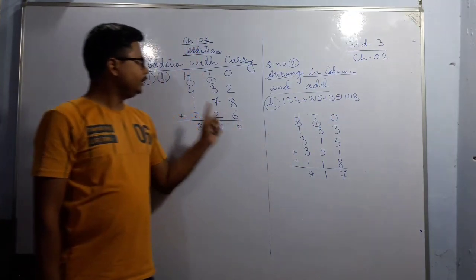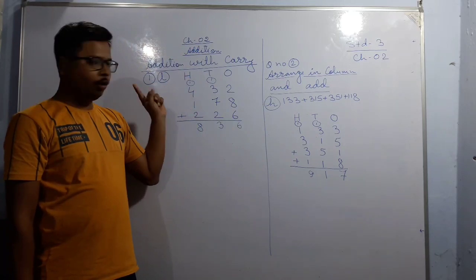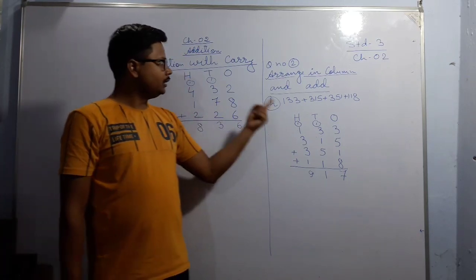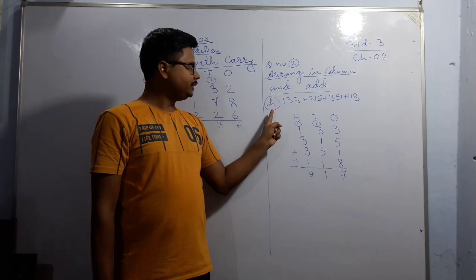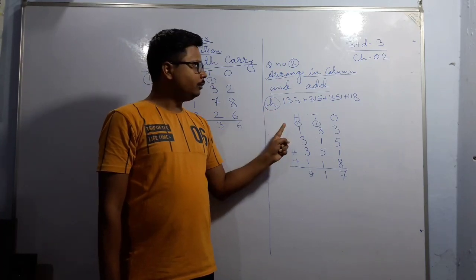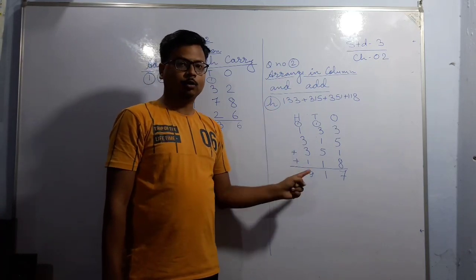Now what you have to do: you have to complete this question number 1, all questions in your classwork copy as well as this question number 2. The H number I have solved, rest of the numbers you have to solve on your own.